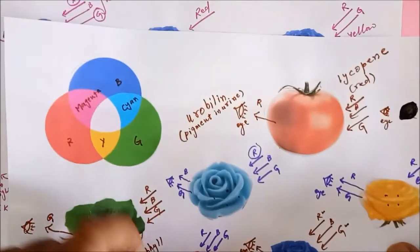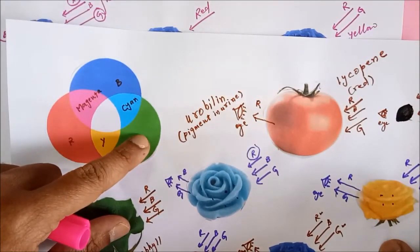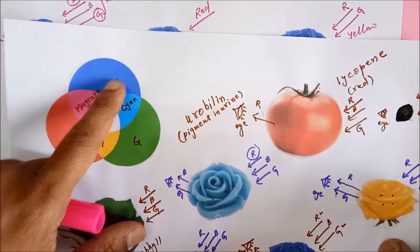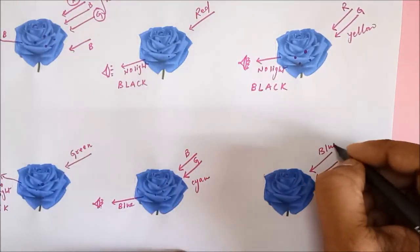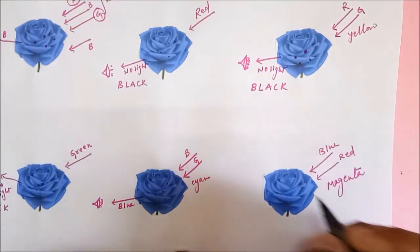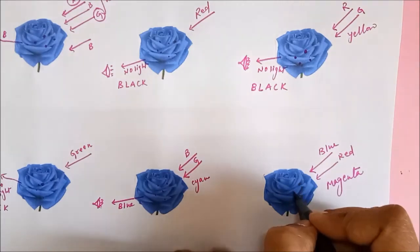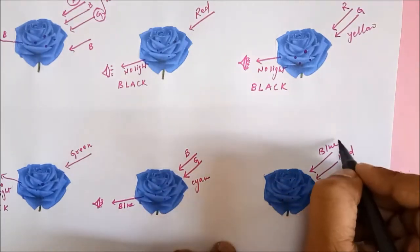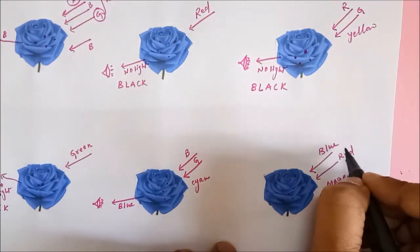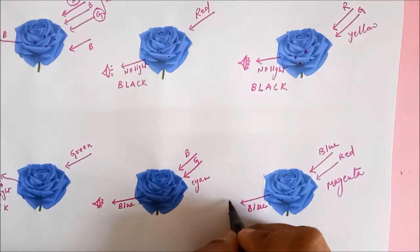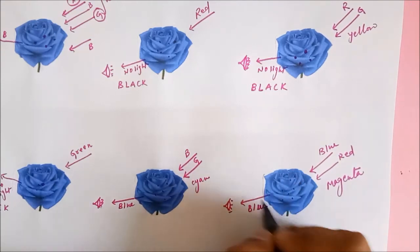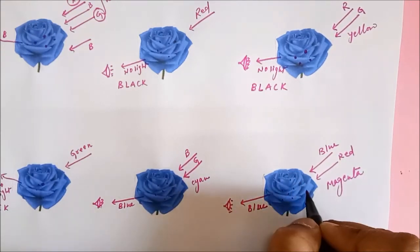Finally, when magenta light falls on the rose, magenta is made up of blue and red. The pigments do not absorb blue color — they only absorb red color. So the blue gets reflected and your eye perceives the color of the rose as blue in magenta light as well.